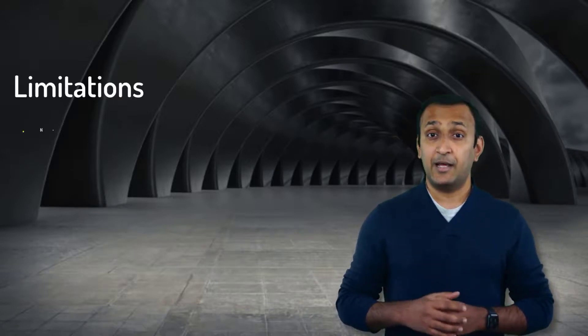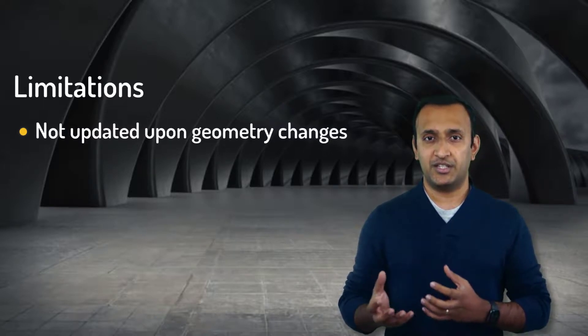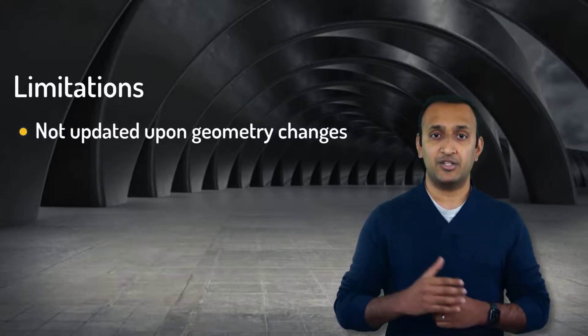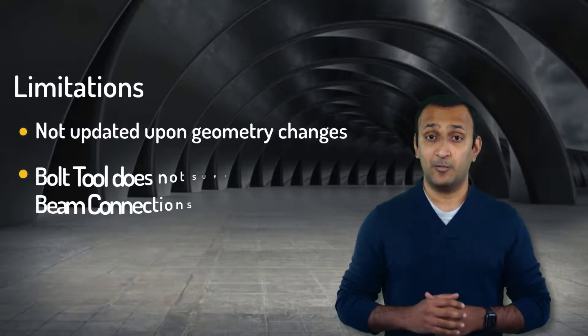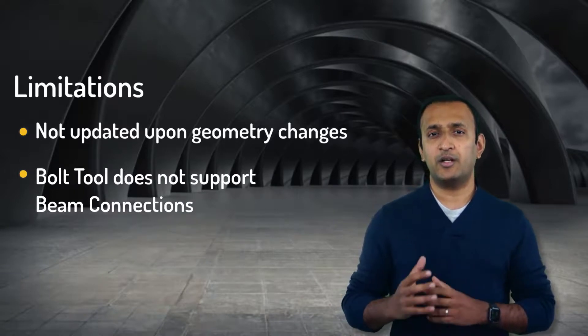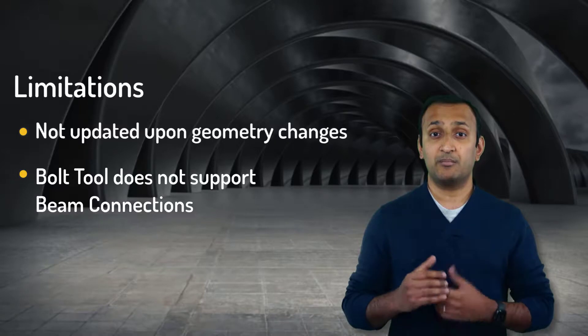Note that the remote point behavior describes the behavior of the scoped geometry. It doesn't describe what happens with the bolt shank or the mating parts, so don't worry that the rigid behavior will make the entire bolted joint rigid. While beam connections are very easy to work with, they do have some limitations: beam connections don't update if geometric changes are made, and they need to be created again using object generator if design iterations are made. Also, the bolt tool, which is used to review multiple bolt results at once, does not support using beam connections.